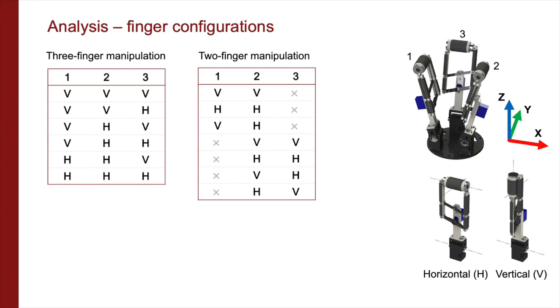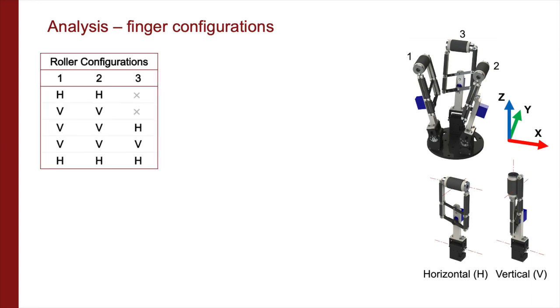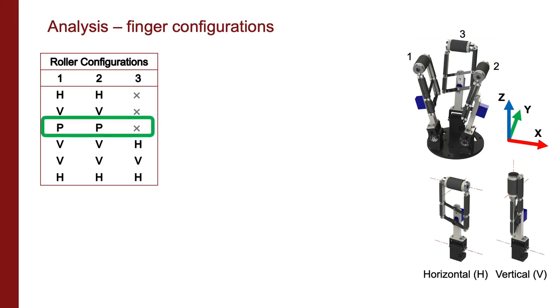Of the thirteen combinations, five were deemed particularly useful for their versatility and ease of use. In addition, there exists a useful two-finger manipulation where finger one and two pivot in sync between H and V, denoted as P for pivoting, as it provides pure X rotation and is suitable for switching manipulation configurations.